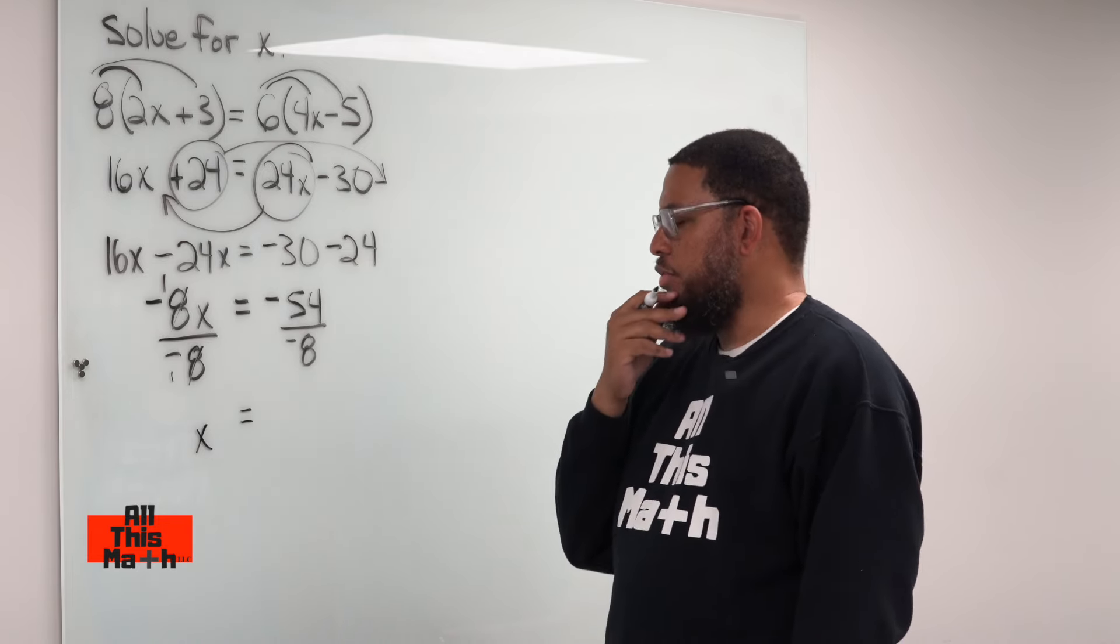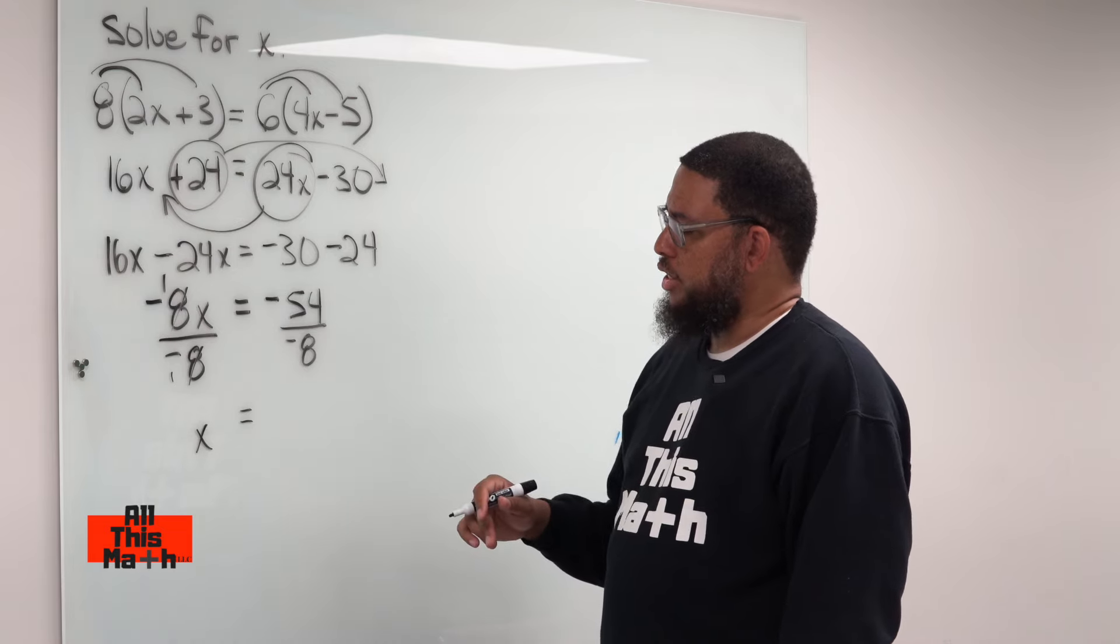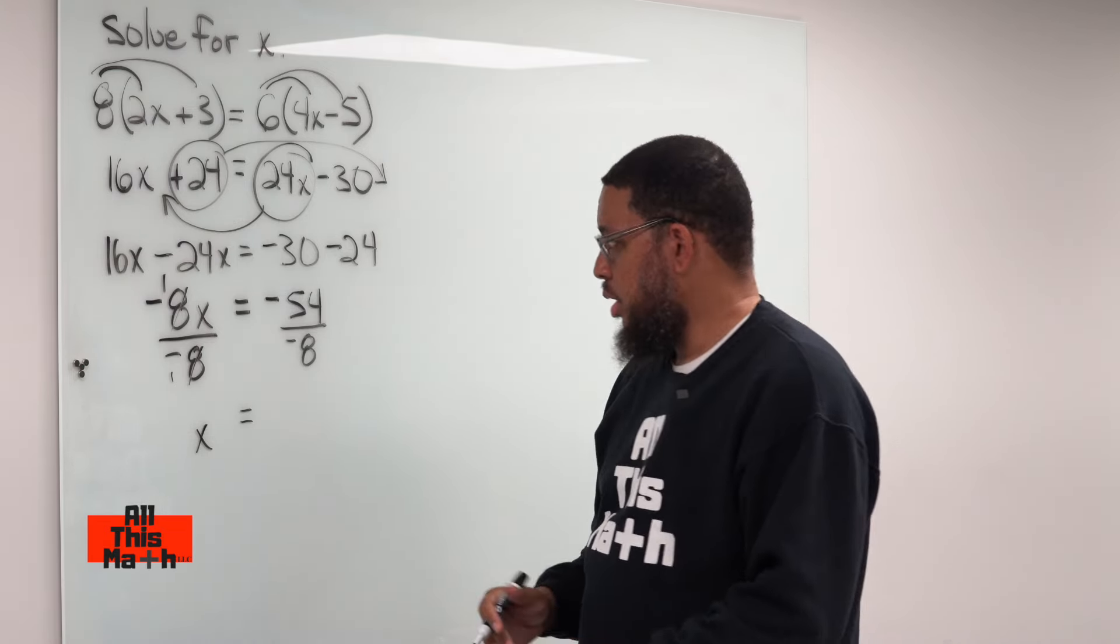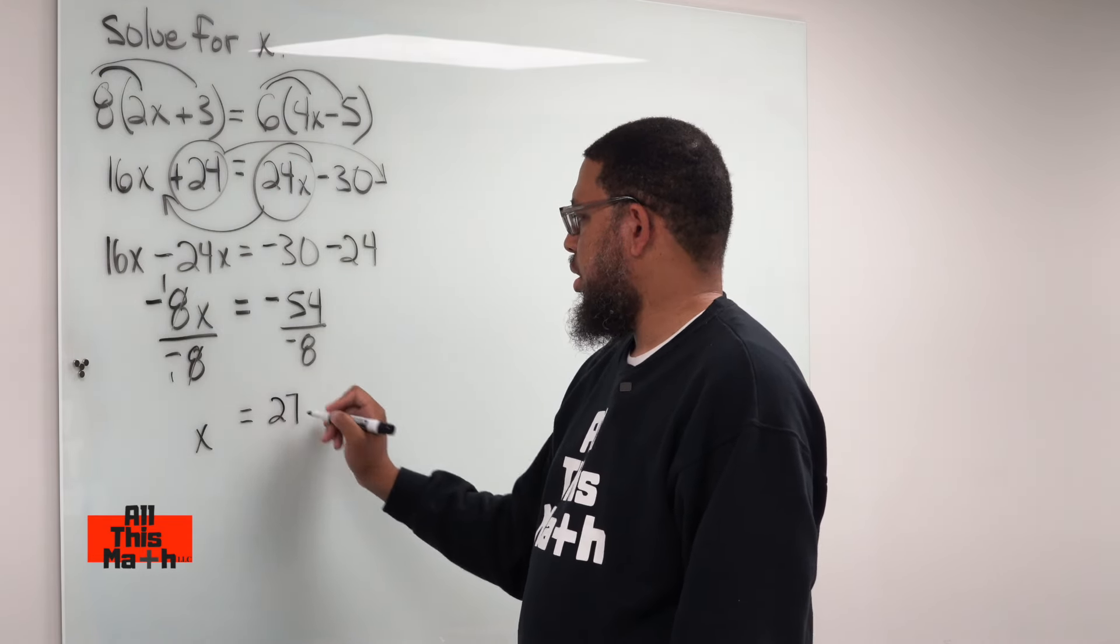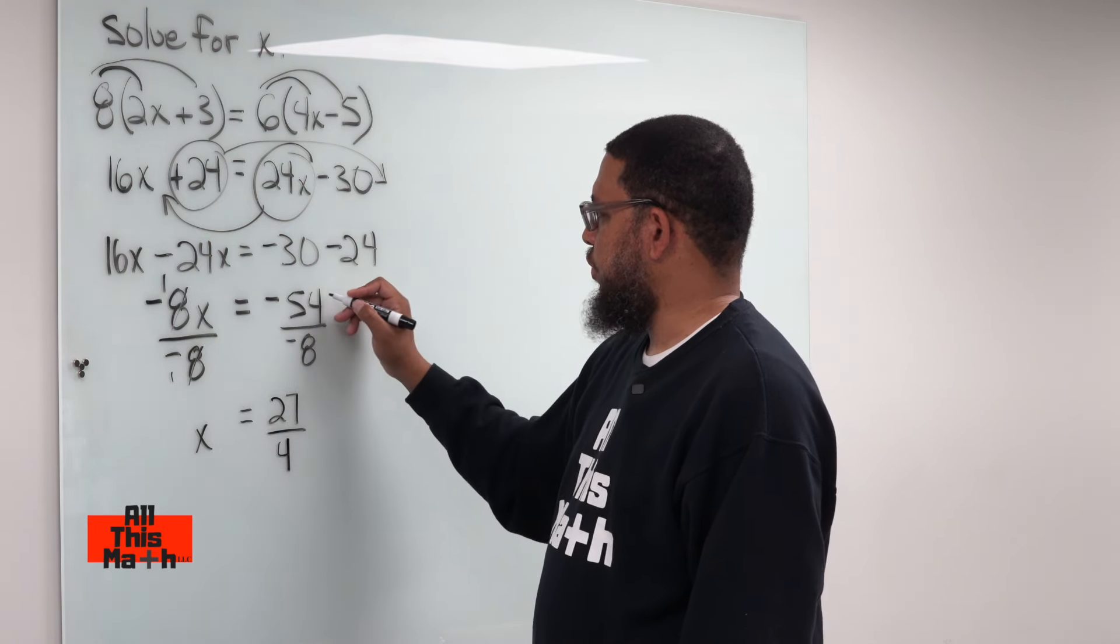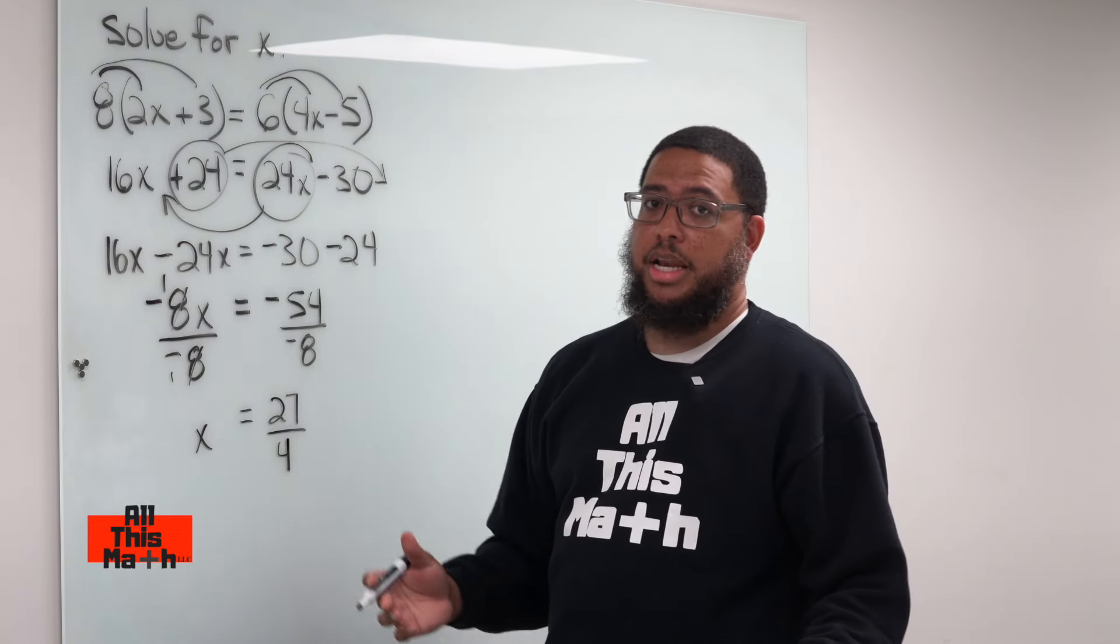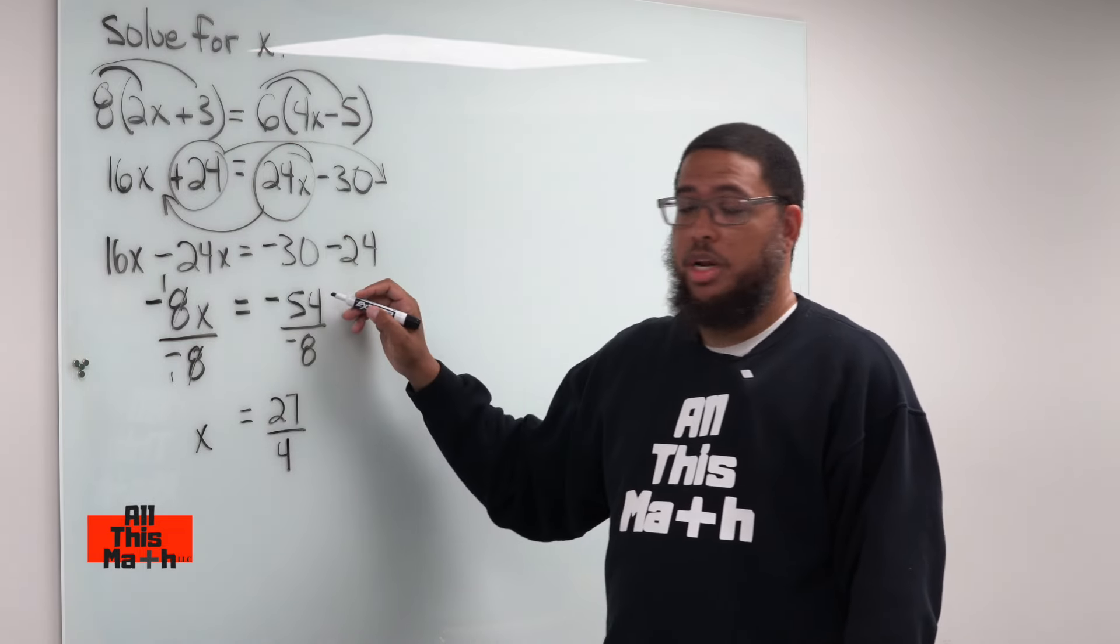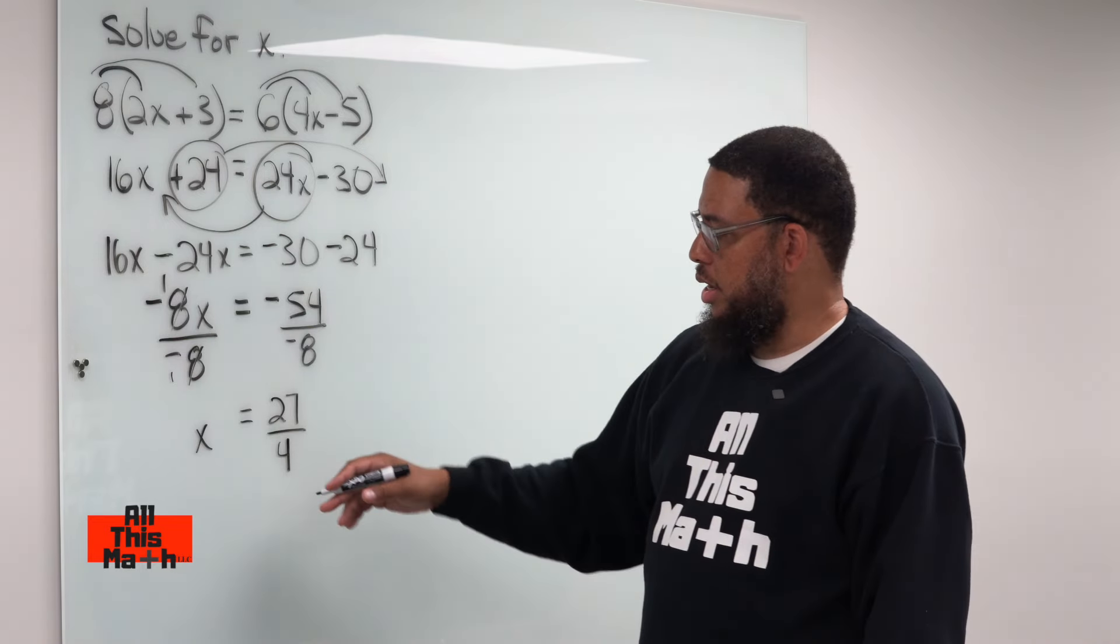But then over here, we're going to have negative 54 over negative 8. 54 is not divisible by 8, but we can reduce this fraction because 54 and 8 have a common factor of 2. So 54 is going to turn into 27, and 8 is going to turn into 4, because 54 divided by 2 is 27, and 8 divided by 2 is 4. Now you might be wondering what happened to the negative signs. Well, understand this: a fraction is just a representation of a division problem. Whenever you're dividing a negative by negative, your quotient is always positive. So the fraction is going to become positive.